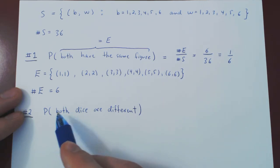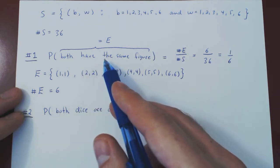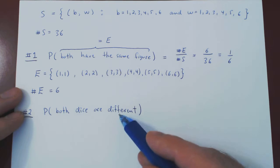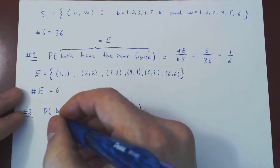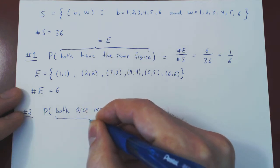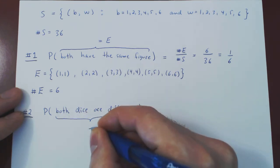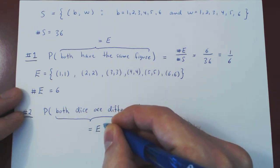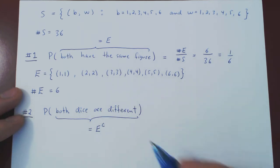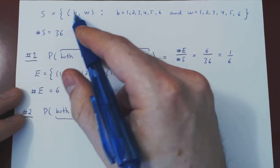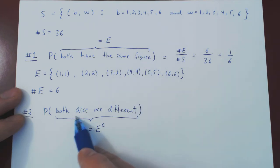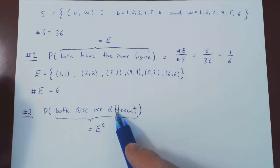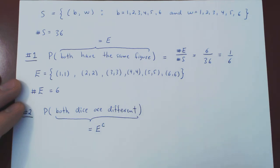Think of it. What is the event that both dice are different with respect to the event that both dice have the same figure? This is the opposite of this one. But a better word for opposite is complement. This is simply E complement. Either when you roll the two dice you obtain the same figure or you don't.